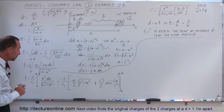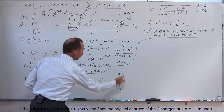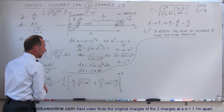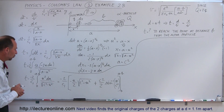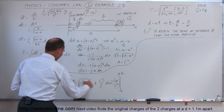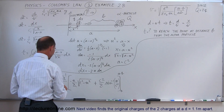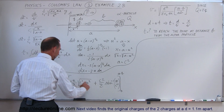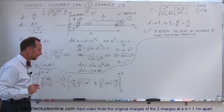Now we're ready to continue. Before plugging in the limits, since these are x limits we have to convert back to x's. Notice that the 2 cancels out — the factor of 2 in front cancels these 2's, becoming 1. And this minus will make that a plus and this a minus.